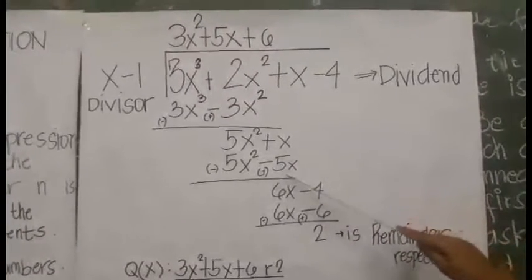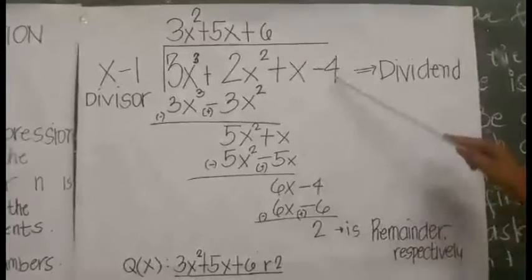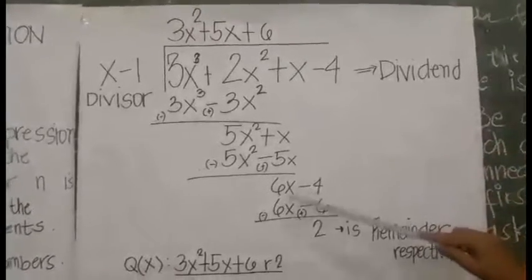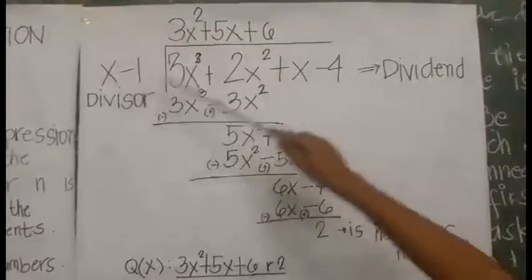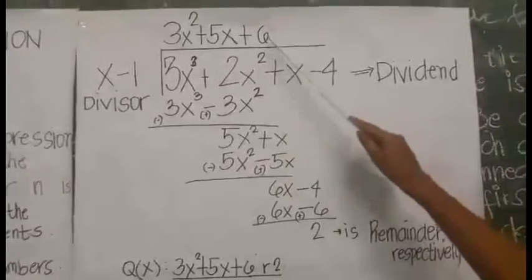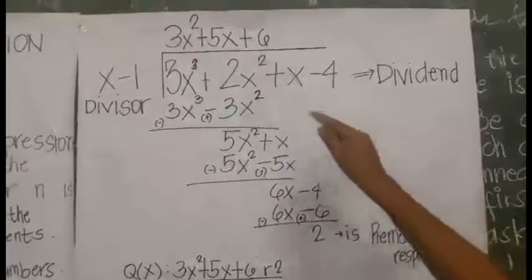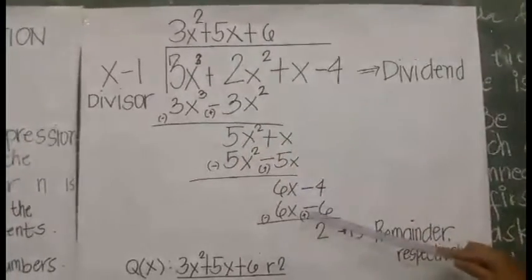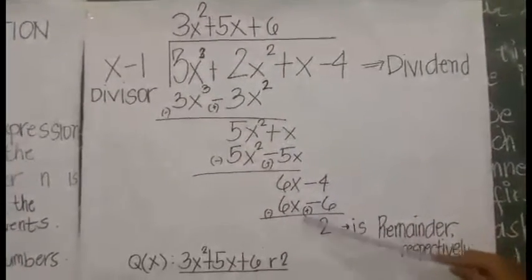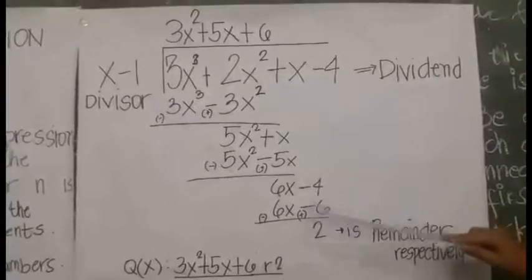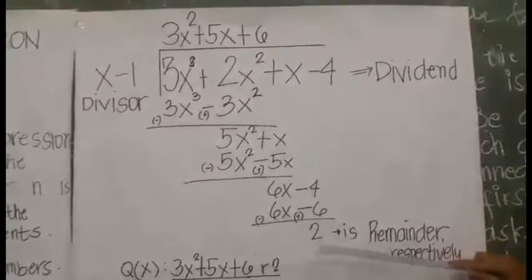x plus 5x equals 6x. Bring down negative 4. 6x divided by x equals 6. 6 times x equals 6x. 6 times negative 1 equals negative 6. Change the sign.